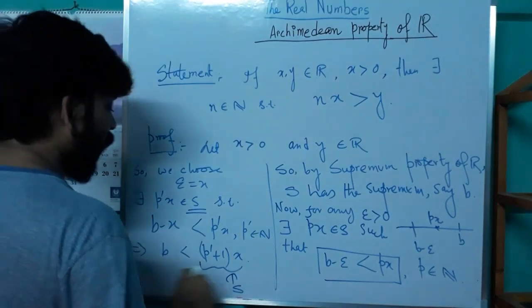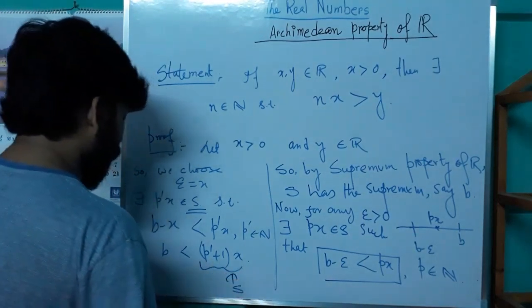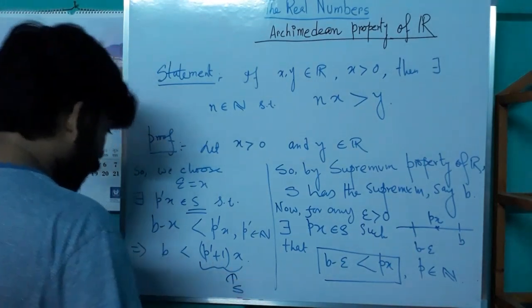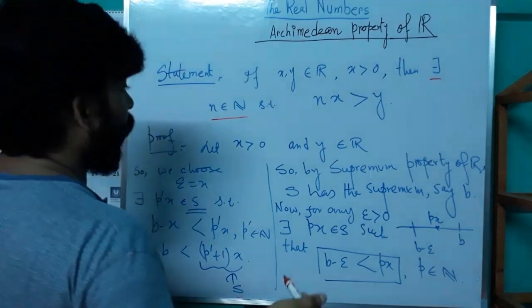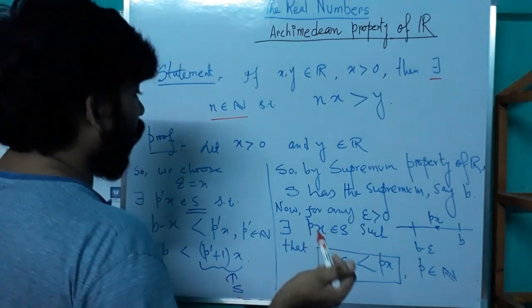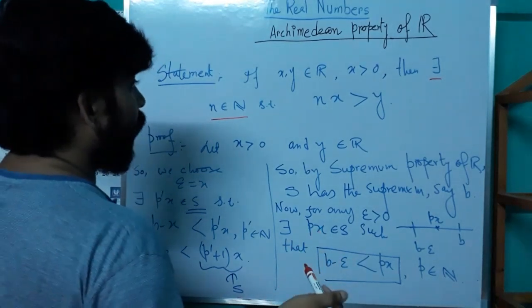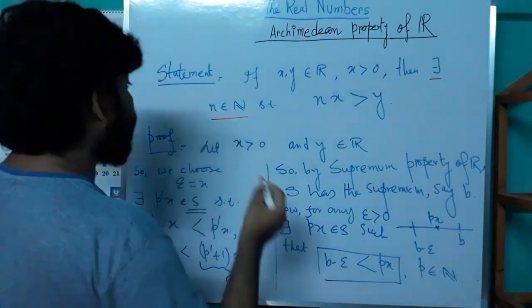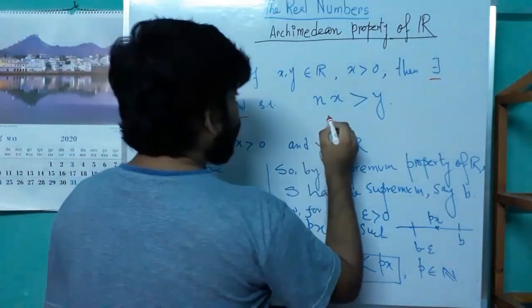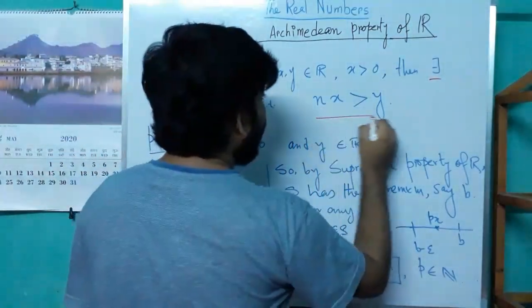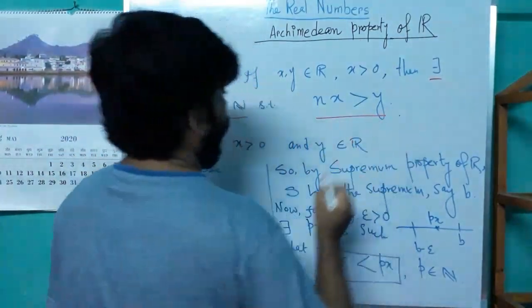That is not possible — that is a contradiction. Therefore, if x and y are both positive, then there obviously exists a natural number n such that n·x is strictly bigger than y.